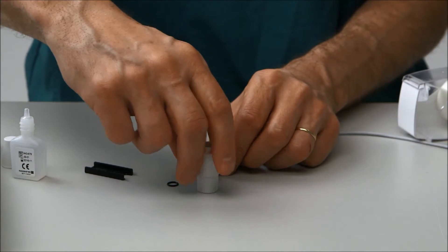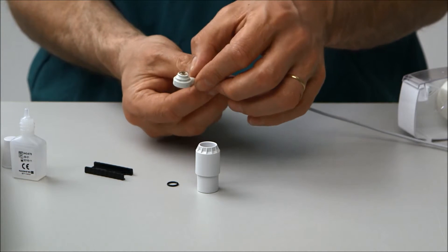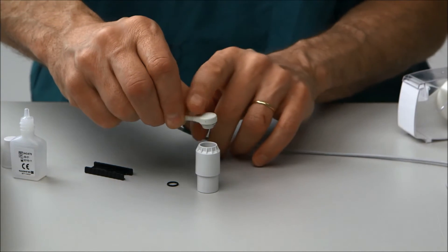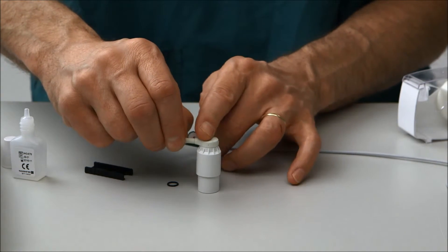Place the membrane unit on a flat surface. Turn the electrode and place it into the top of the membrane unit. Press the electrode firmly until you feel it snap into place.